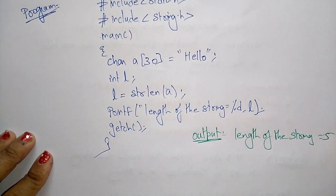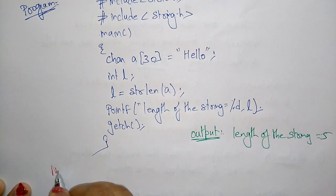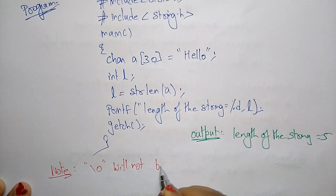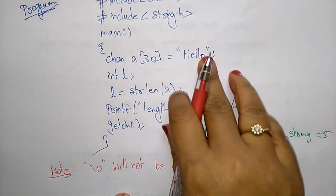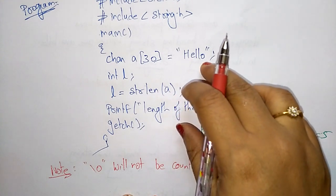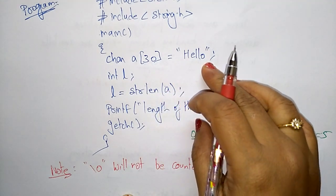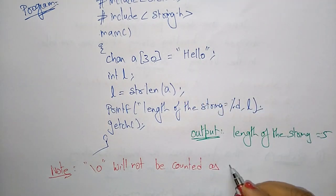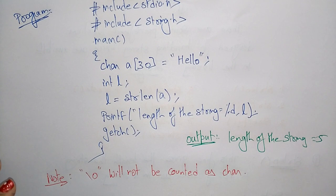One important point to remember: the null character ('\0') will not be counted as a character. The compiler by default places a null character after the completion of the string so that at runtime it knows the string has ended — but even though the null character is stored there, it will not be counted. So this is about strlen. In the next video I'll explain the next library function, strcpy. Thank you.